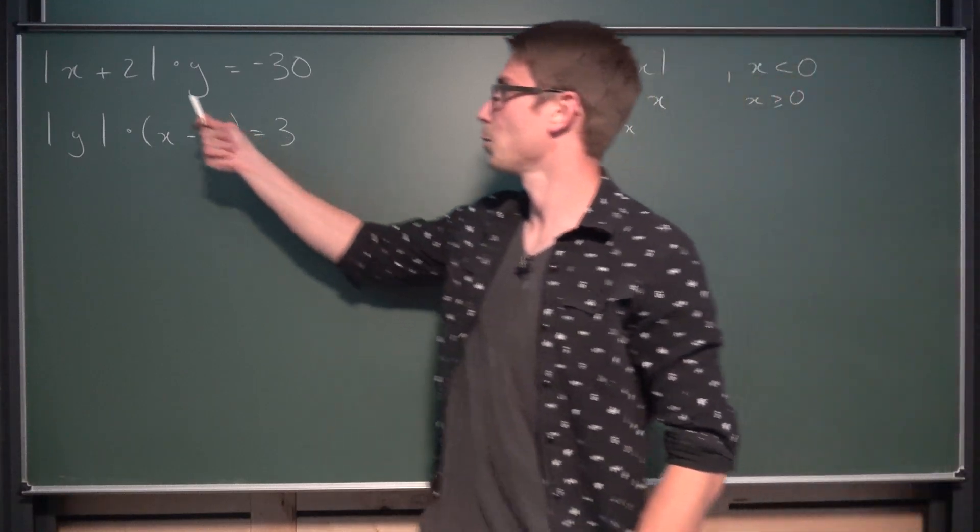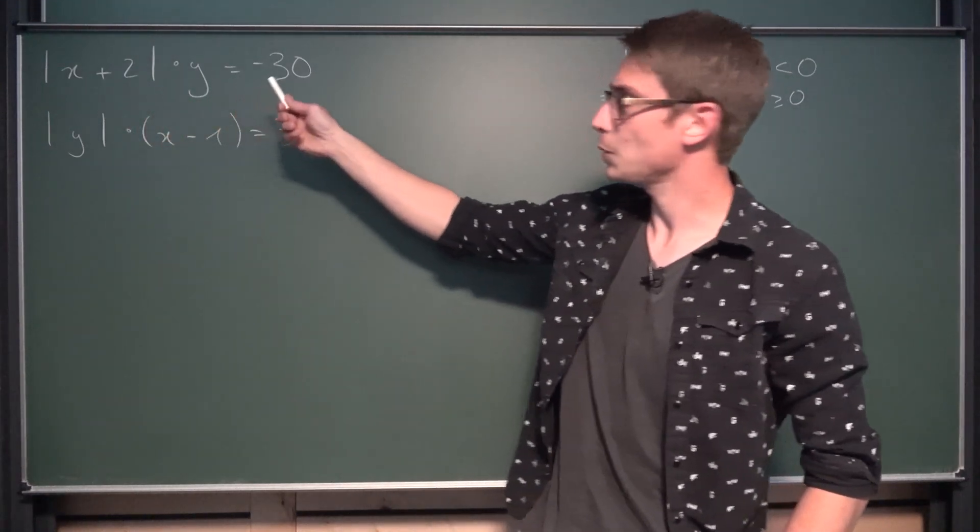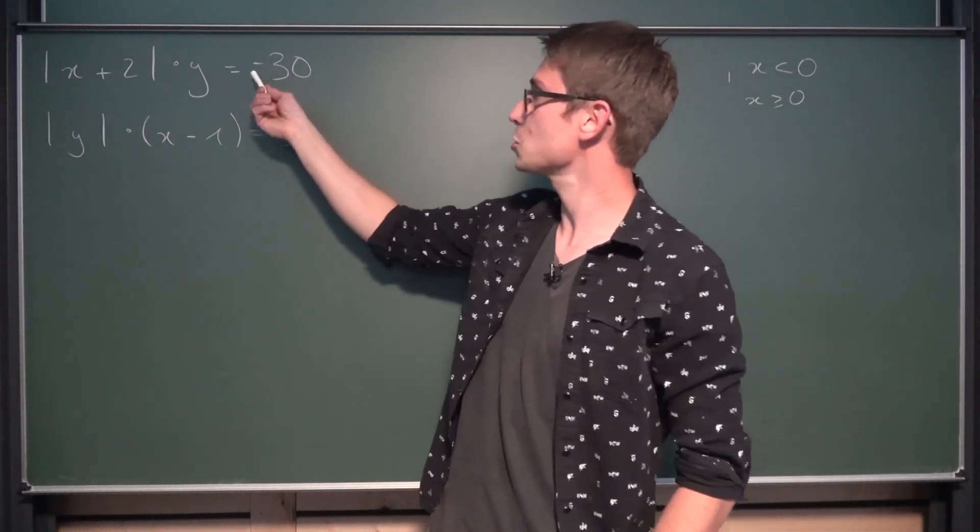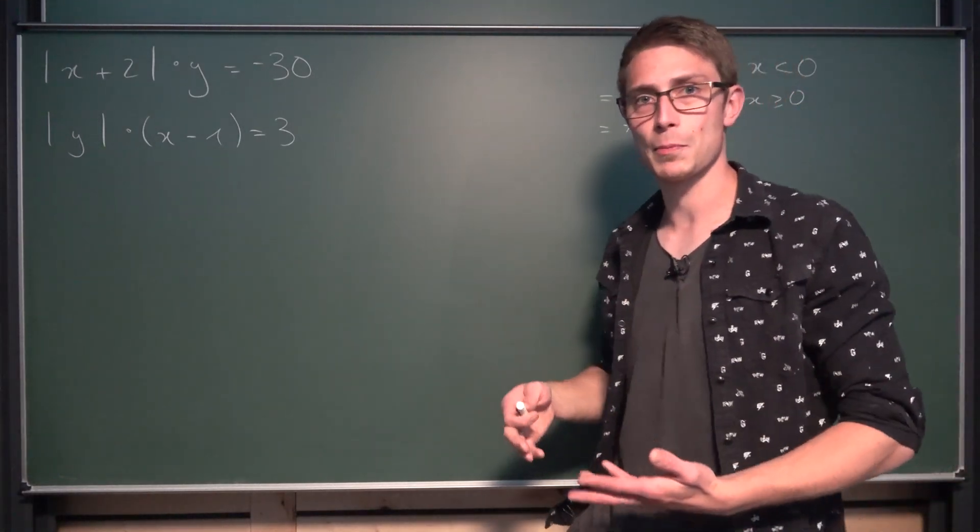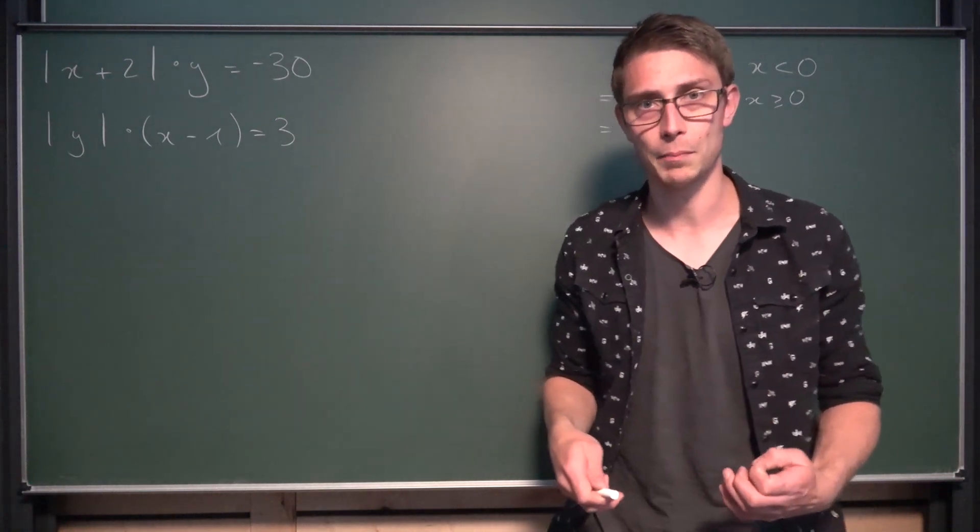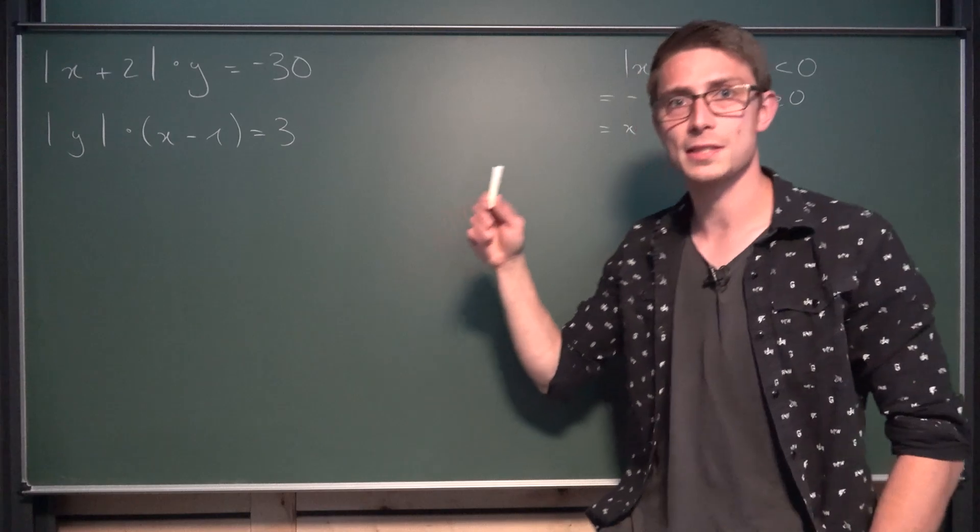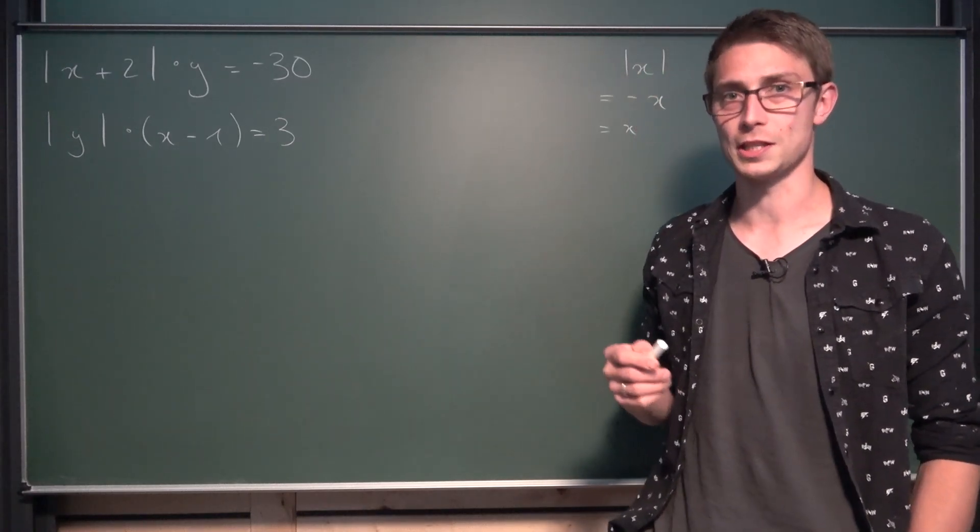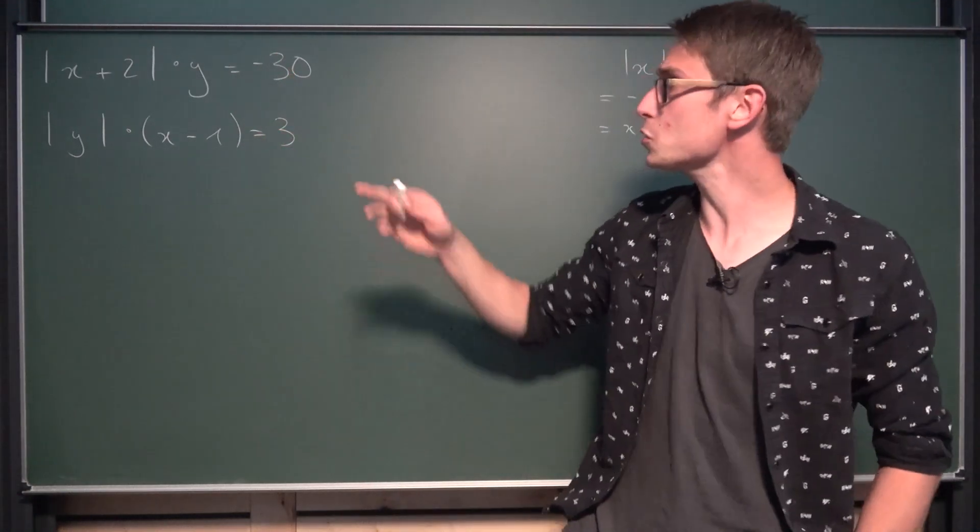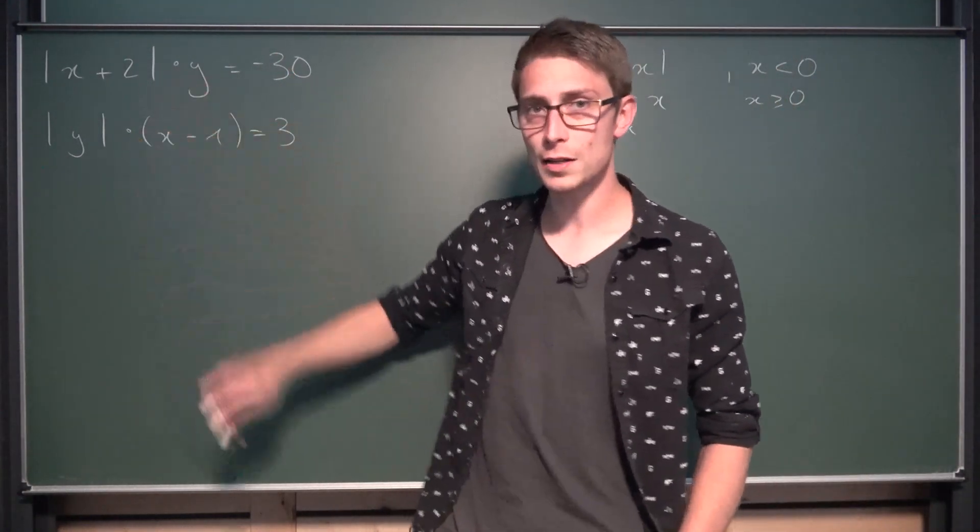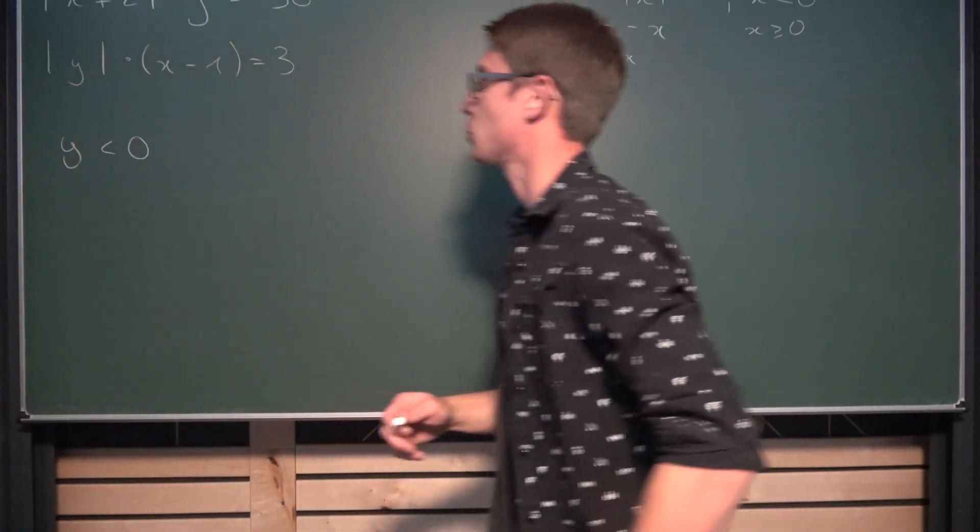What you might notice is that on both equations we got a multiplication of two factors. On the first equation we got a multiplication of two things being equal to negative 30, a negative number. How can you get a negative number by multiplying? Well, by multiplying a positive by a negative number. Now you might notice something. Namely, x plus 2 in absolute values is always strictly positive. Meaning, in order for the first equation to be true, to be a negative number, we must have y to be less than 0. This is what we get from equation number 1.